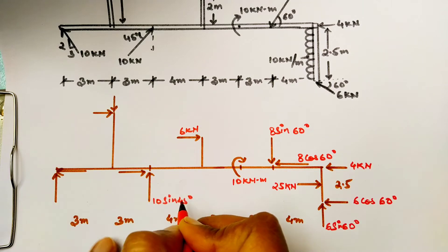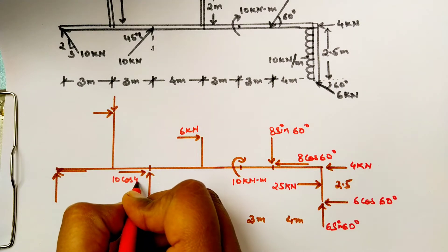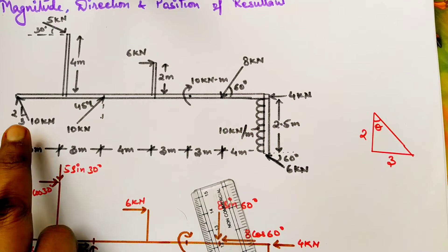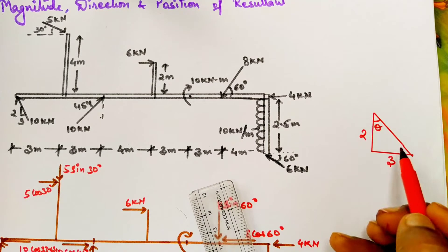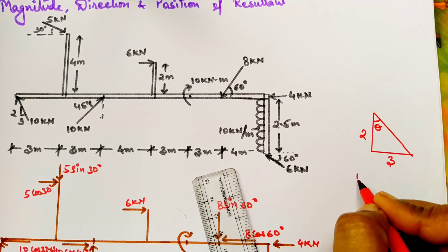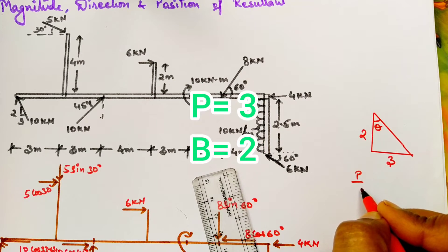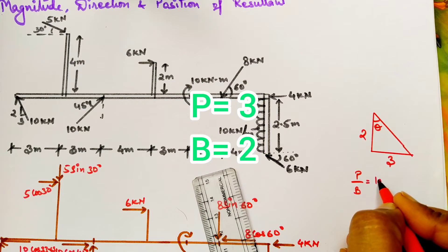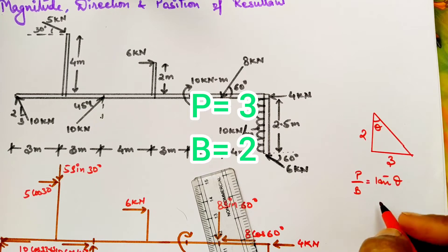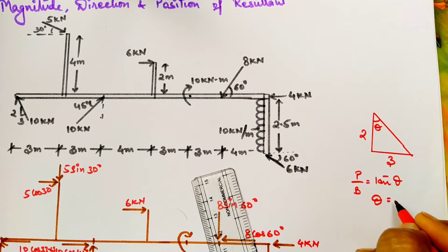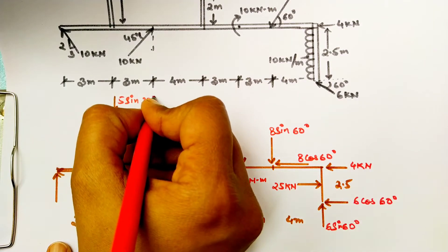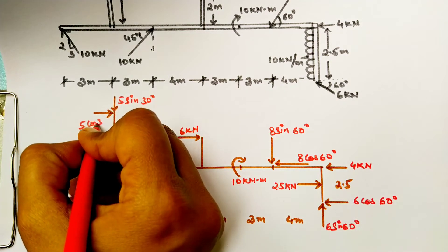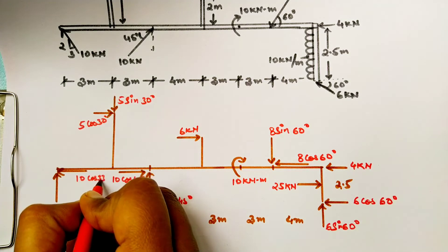For a force given as a triangle, draw that triangle in the same fashion as provided in the question. We need to find theta using tan θ = perpendicular / base. Put in perpendicular as 3 and base as 2 into the calculator to find theta. Then identify and write down all the values of forces with their inclined angles. We have now written all the forces.